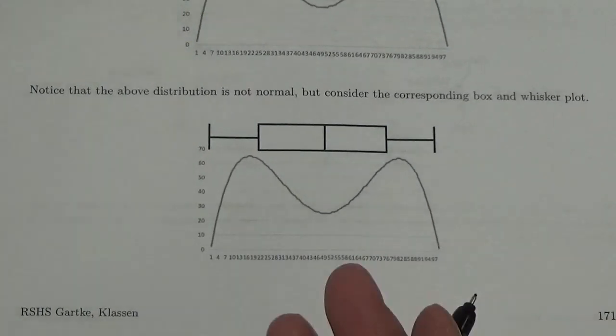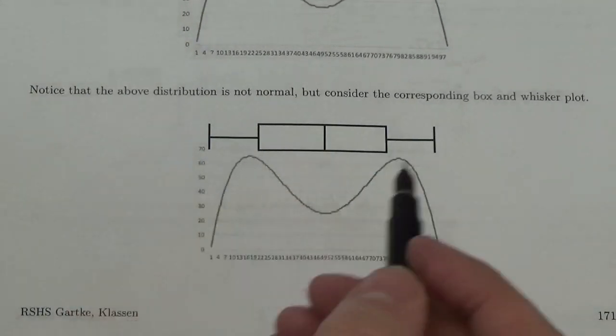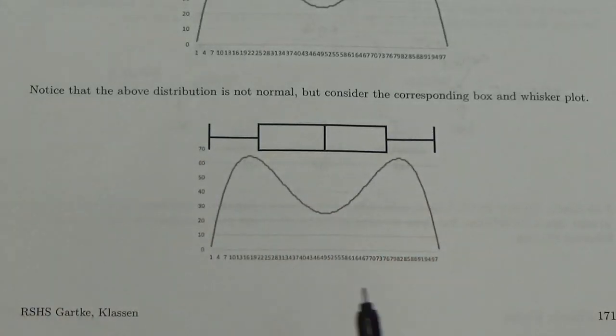So just because the box and whisker plot is symmetric, doesn't necessarily mean that the data is normally distributed, but it is a pretty good indication that it might be. And that it could be something that you should be looking for when you see a problem that has that property to it.